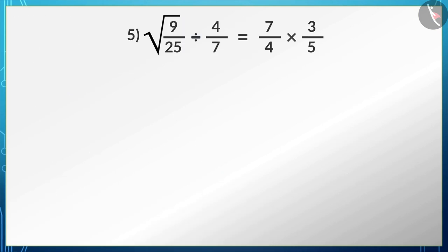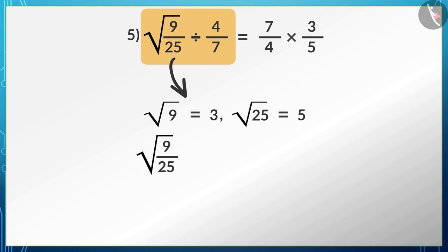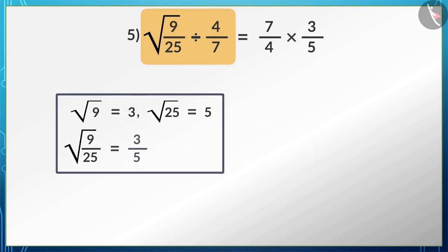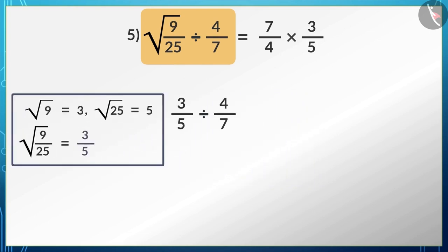Sir, if we look at the left side, that is LHS, then we can write square root of 9 is equal to 3 and square root of 25 is equal to 5. In this way we can write square root of 9/25 as 3/5.